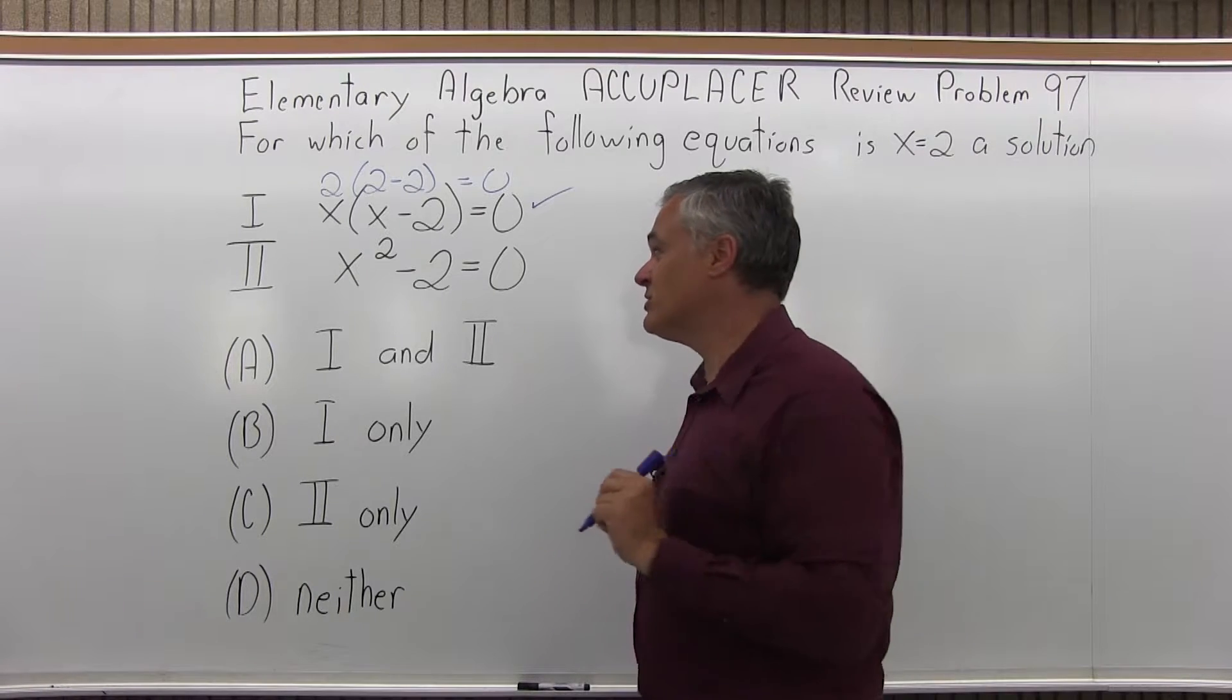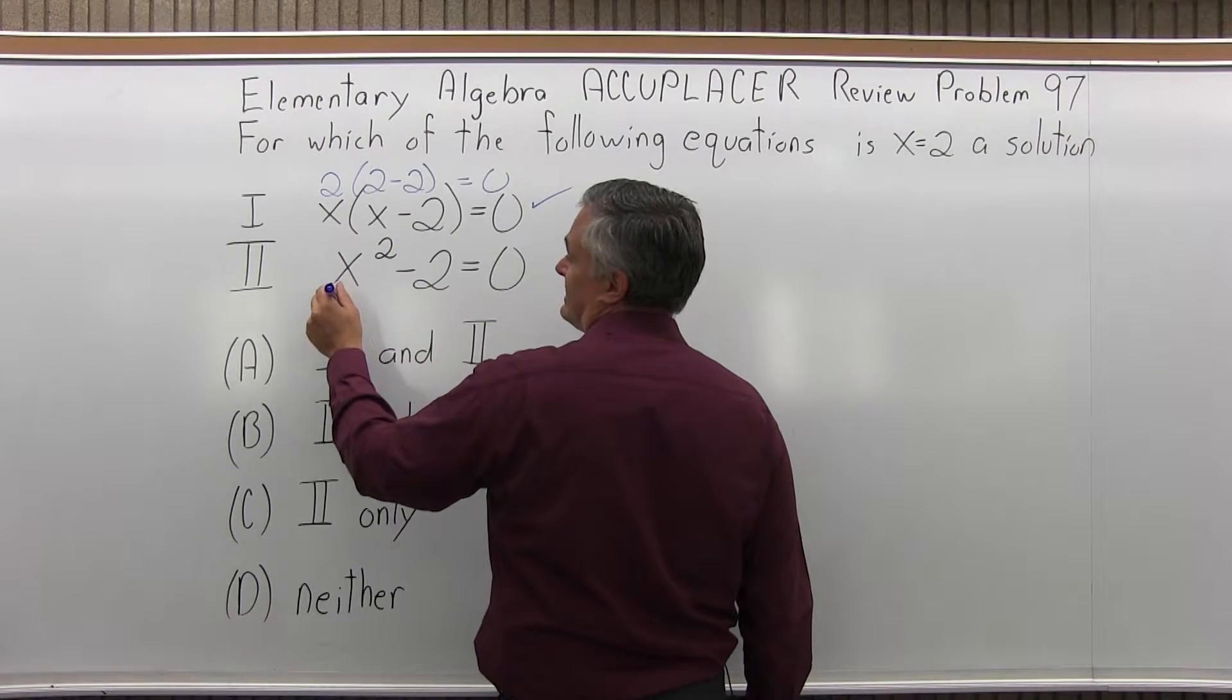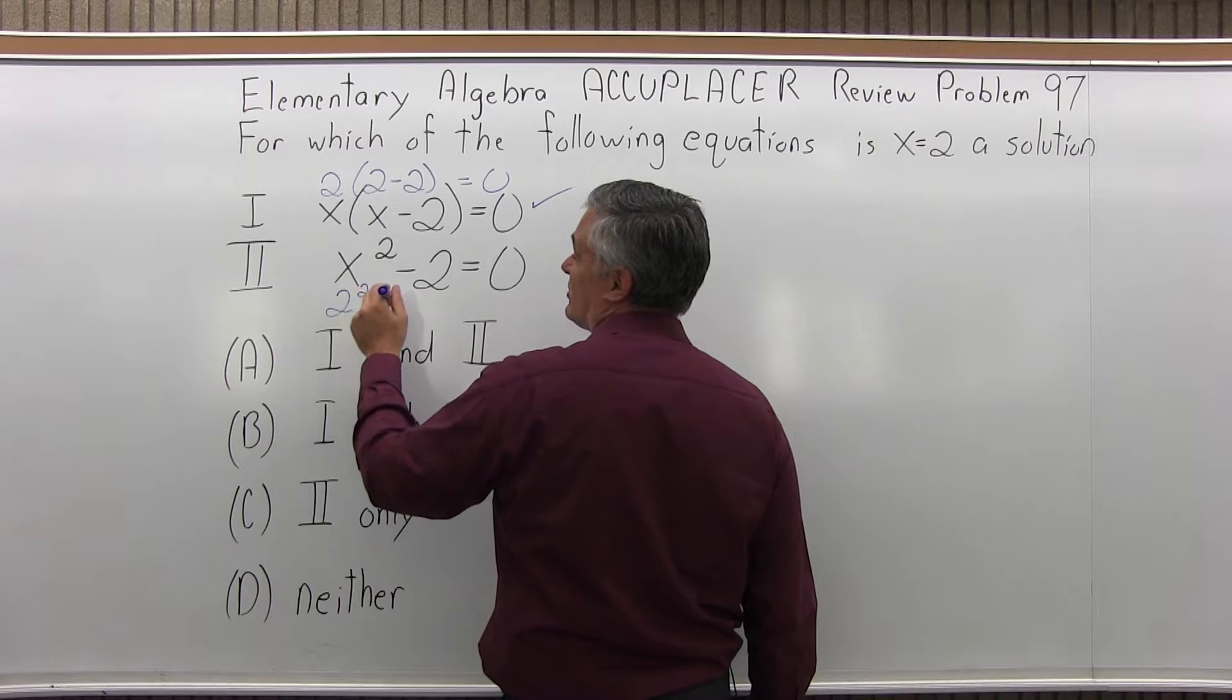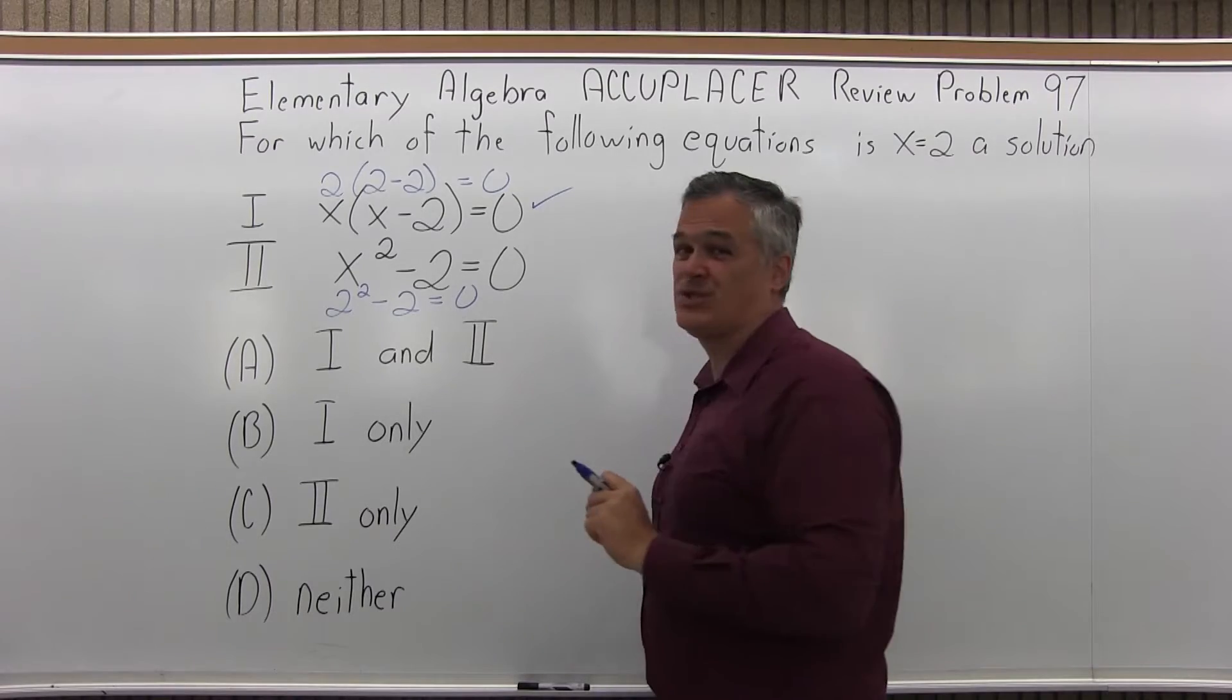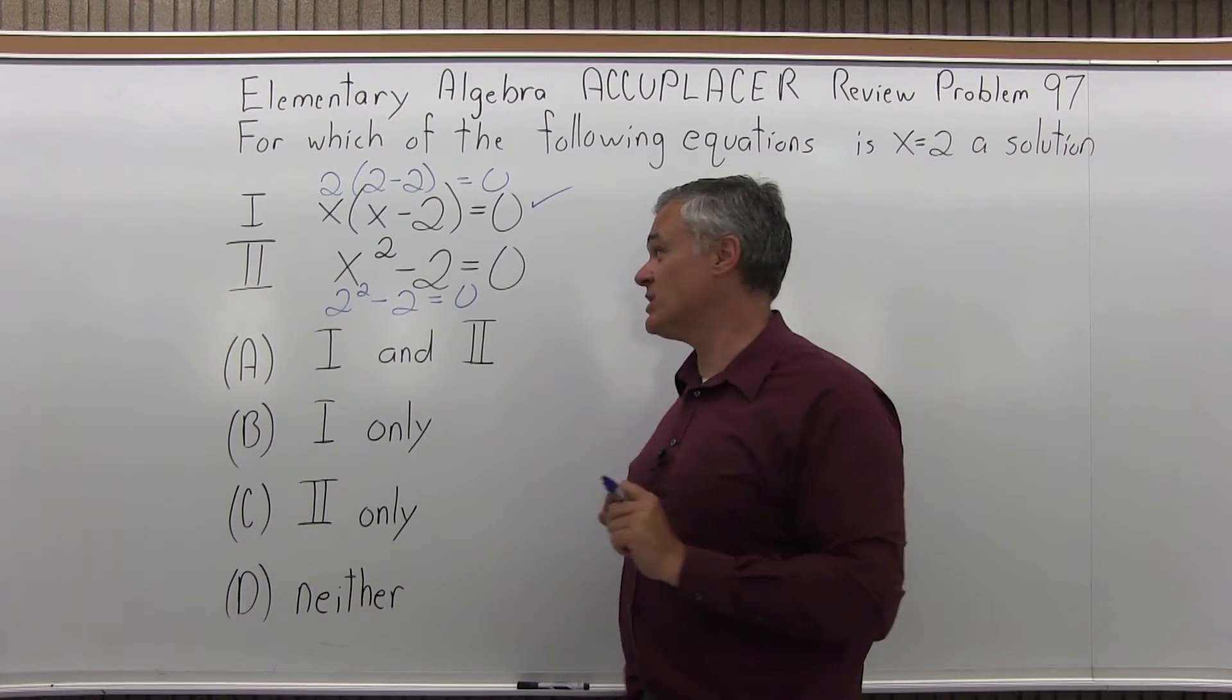Now let's see if it works for option 2. Put in a 2 for x, so x squared becomes 2 squared minus 2. Is that equal to 0? You're going to have 4 minus 2, which is 2. Your equation says 2 equals 0, which is not true.